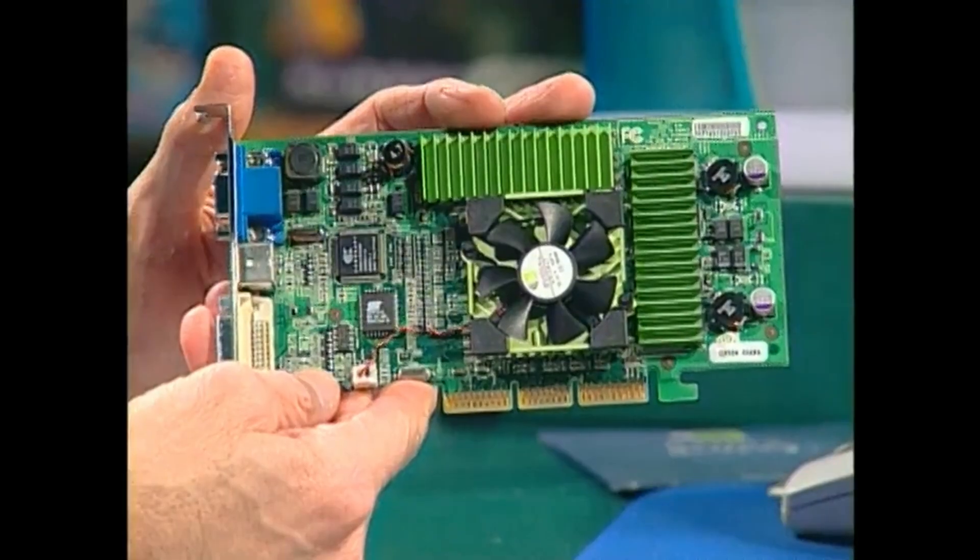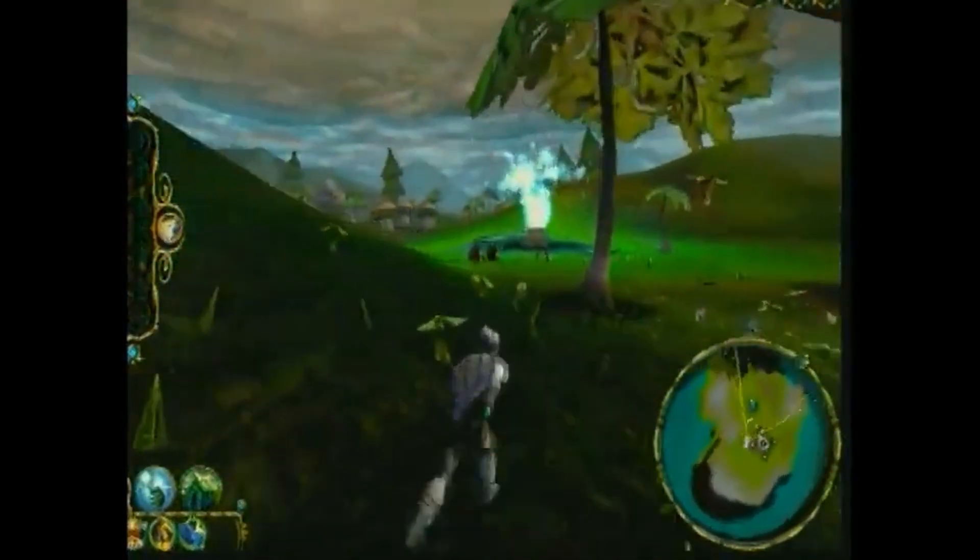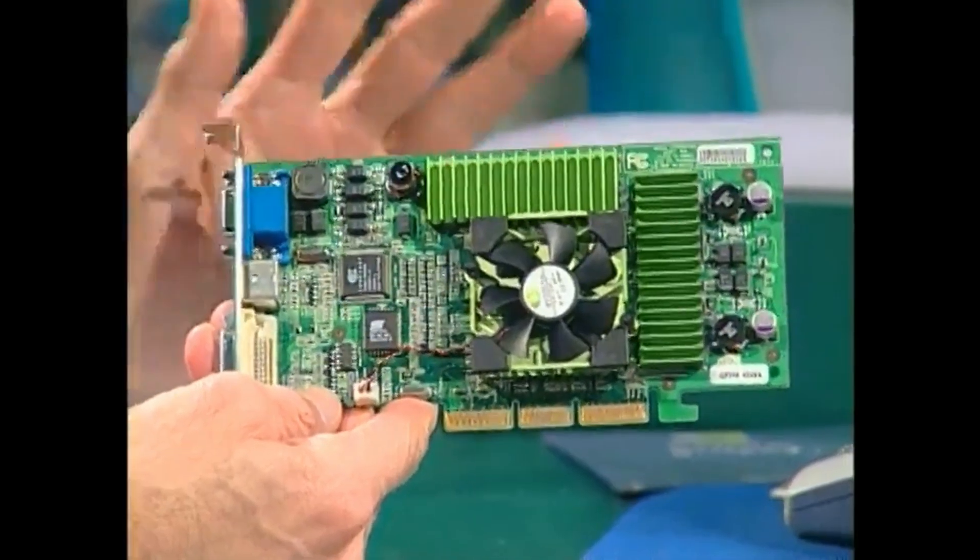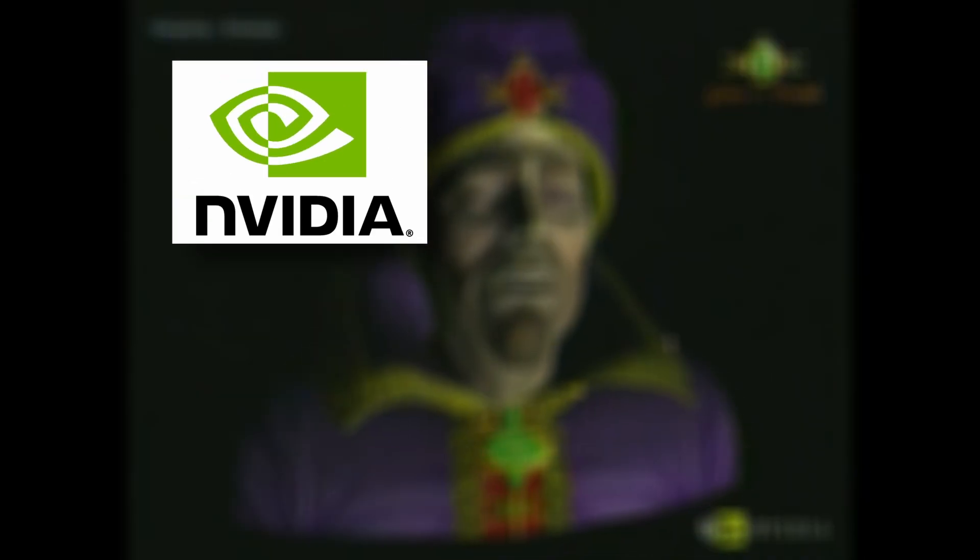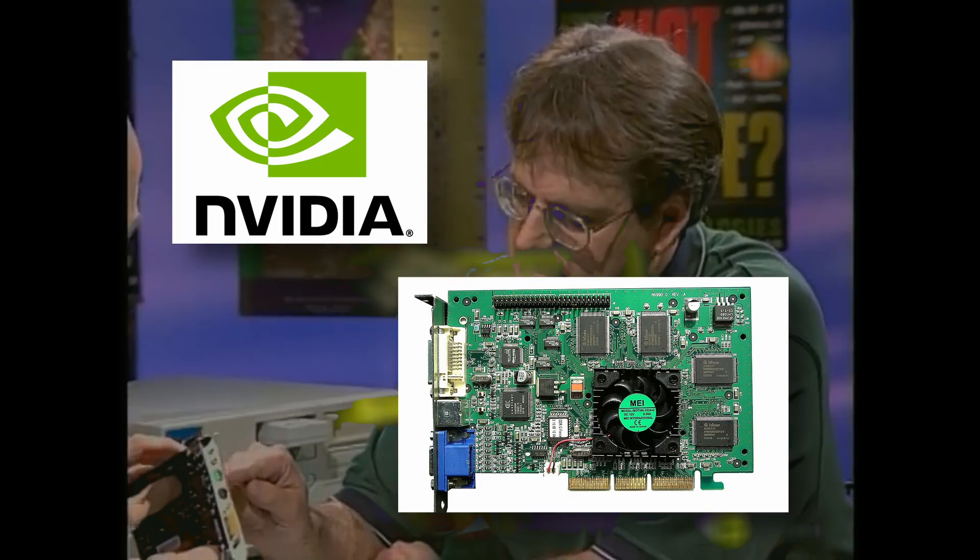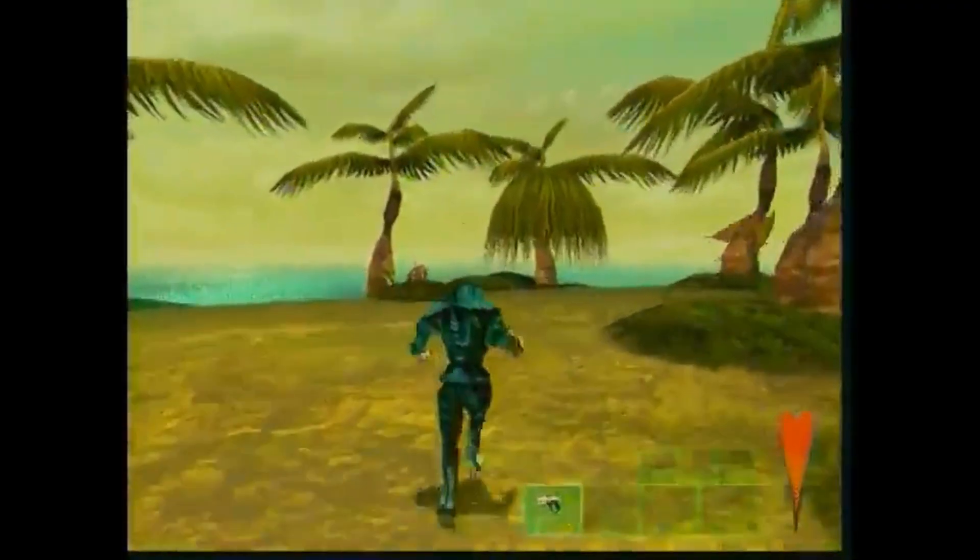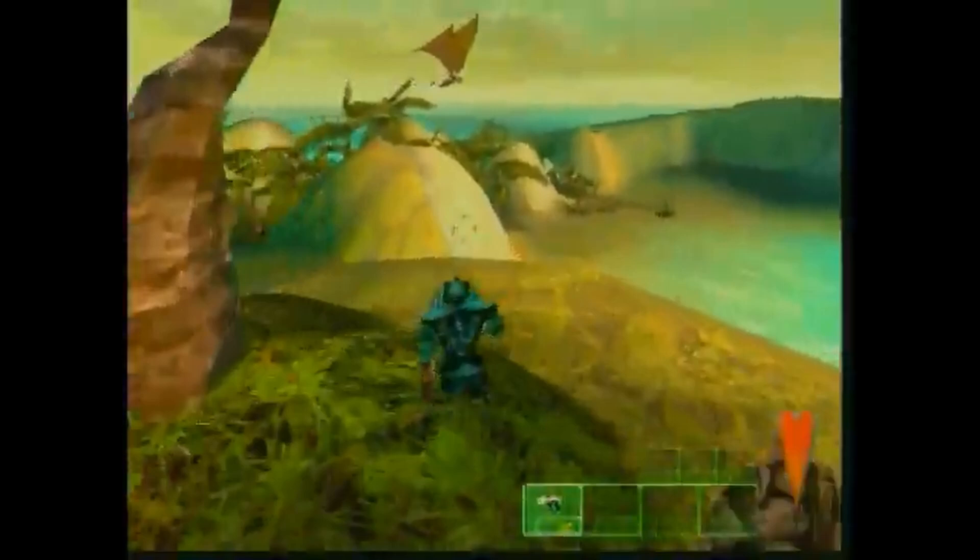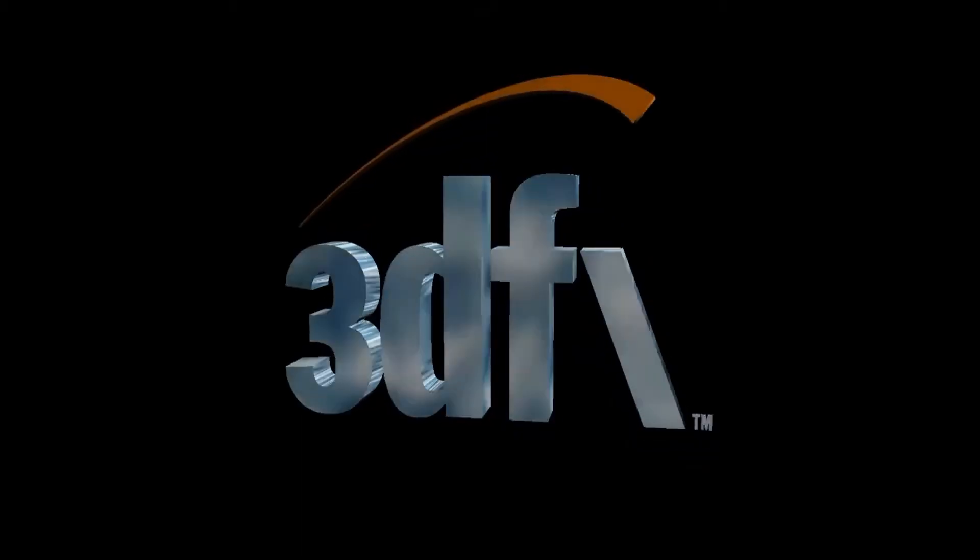By 1998, SGI faced an existential threat from the rise of dedicated GPUs, yet the company initially underestimated these new graphics cards. SGI believed that consumer-oriented graphics cards could never match the performance of their proprietary MIPS workstations. This misjudgment left SGI unprepared for a market shift that would soon erode its core business. NVIDIA, founded in 1993, quickly became a formidable competitor. With its GeForce series of graphics cards introduced in the late 90s, these GPUs offered high performance at a fraction of the cost of SGI's proprietary solutions, making advanced graphics accessible to a broader audience. NVIDIA's focus on the consumer market, coupled with aggressive pricing, allowed it to rapidly gain market share.